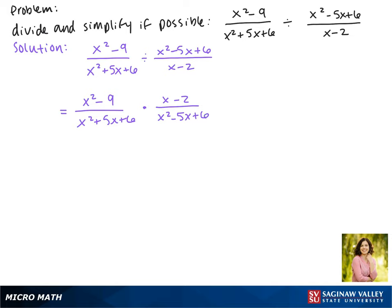Now we can factor. So in our numerator in the first term this is the difference of squares so we get x plus 3 times x minus 3. In the denominator the factors of 6 that will make 5 are positive 3 and positive 2.